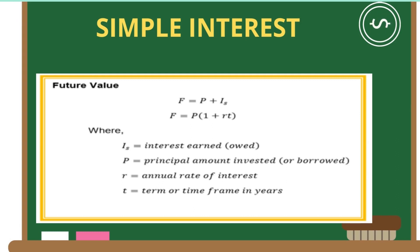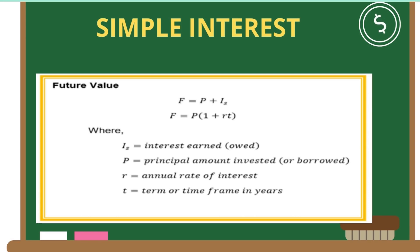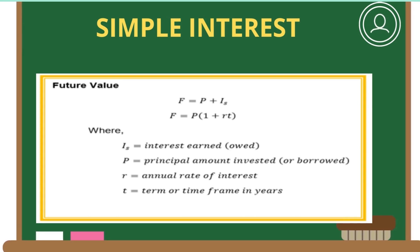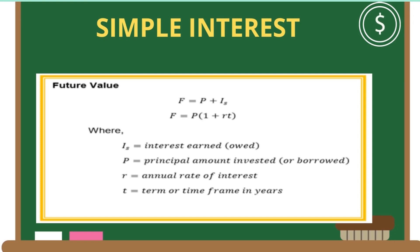This is the formula of future value: F = P + I_s, or F = P(1 + rt), where I_s or the simple interest is the interest earned or owed, P is the principal amount invested or borrowed, r is the annual rate of interest, and t is the term or time frame in years.